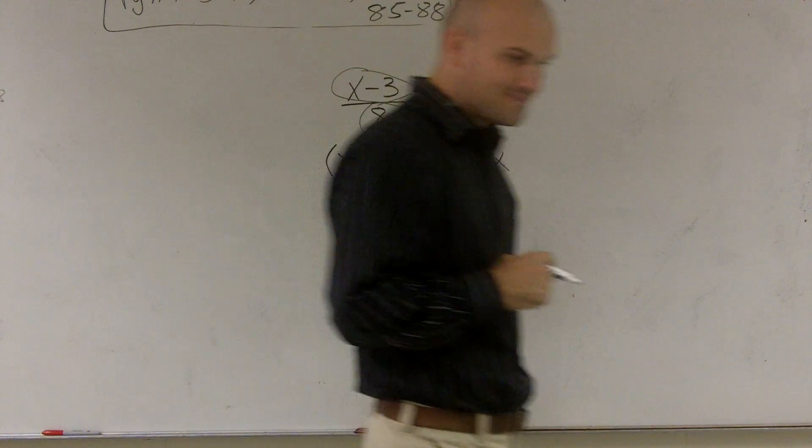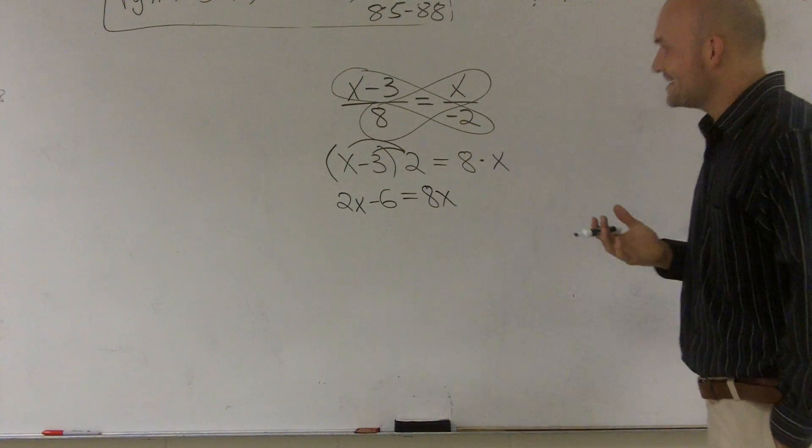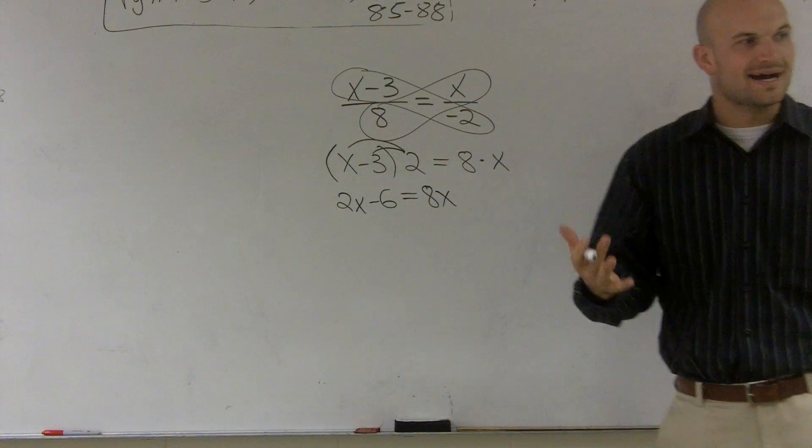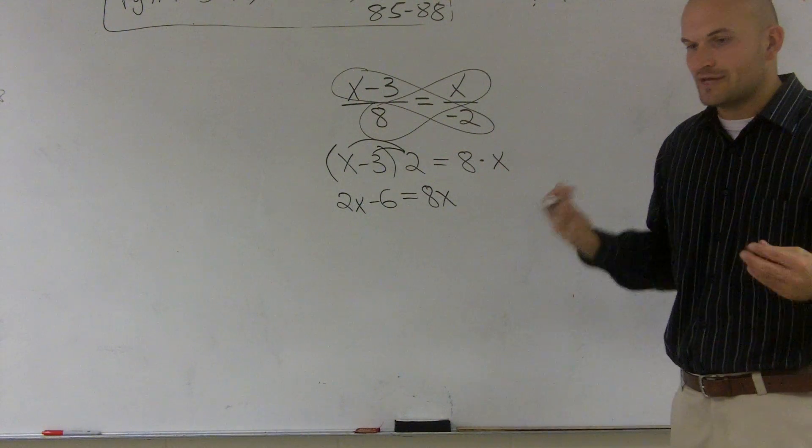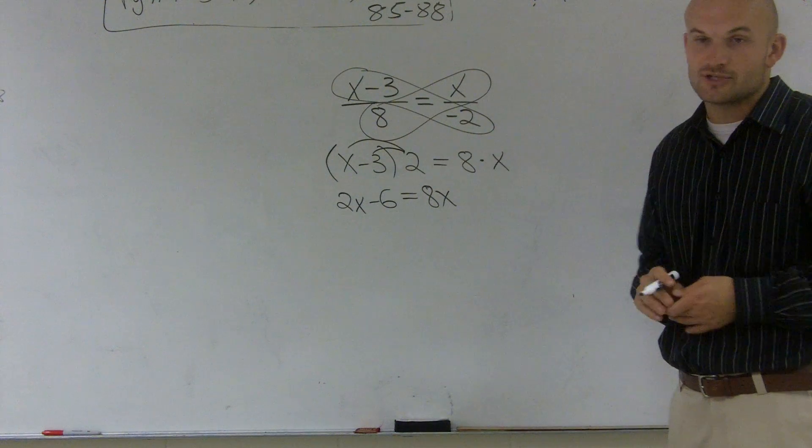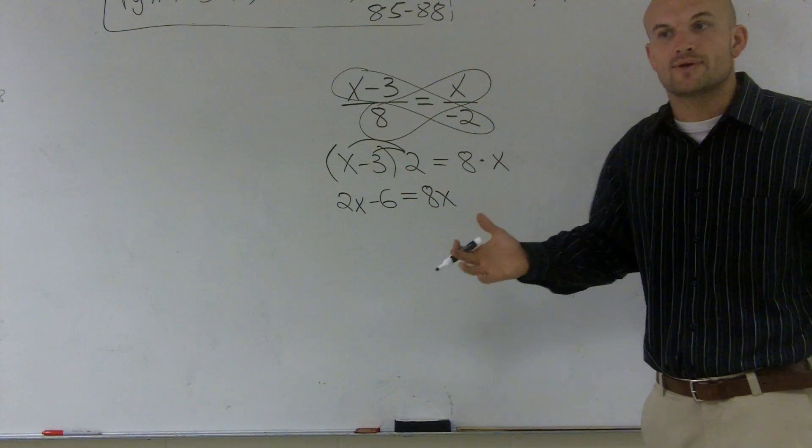Now, the fun part about this problem, if you want to call it fun, is now we have a variable on both sides. So to get rid of our variable on one of the sides, we have to get rid of one. We can either get rid of the 8x or get rid of the 2x. It doesn't matter which one you want to get rid of.